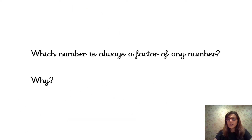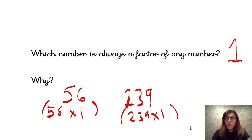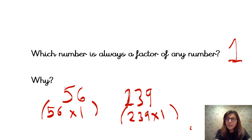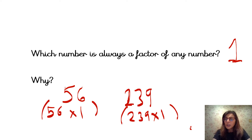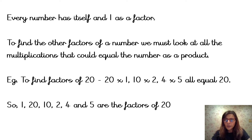Which number is always a factor of any number? Pause the video and tell me which number is always a factor of any number and tell me why. So the answer is 1. 1 is always a factor of any number. Why? Because the number has to be multiplied by itself and the number 1. So for example, let's look at the number 56 — 56 times 1 gives us 56. 239 can be multiplied by 1 to give us 239. So any number at all can always be multiplied by itself and the number 1.